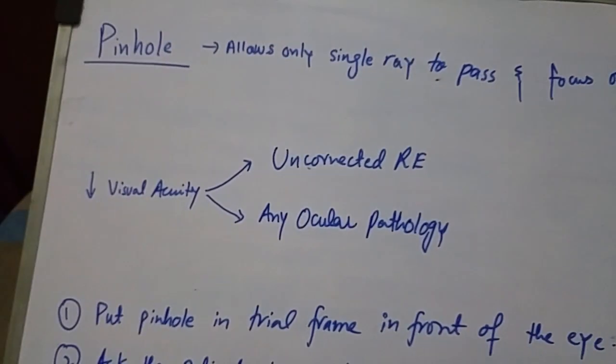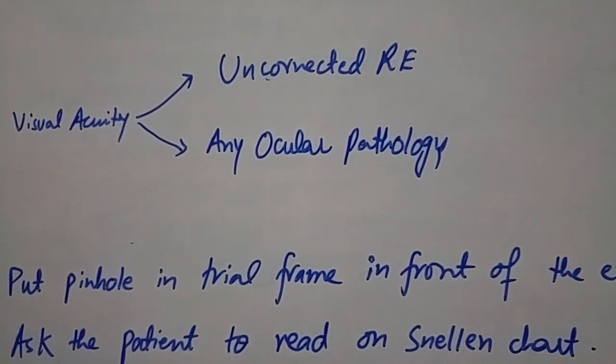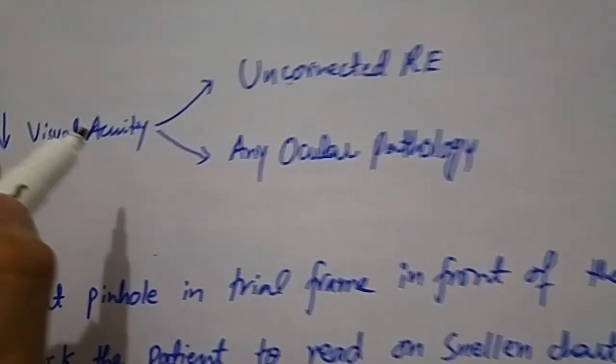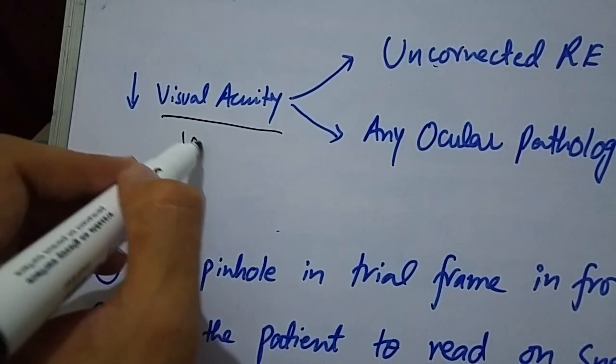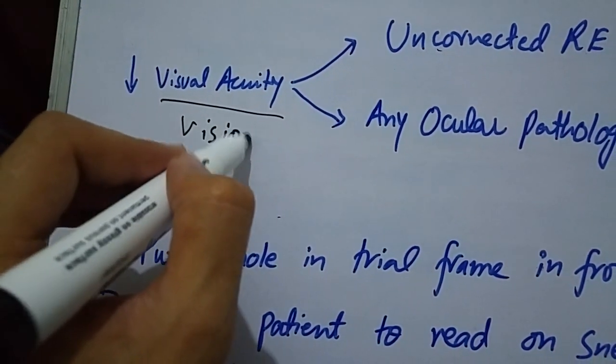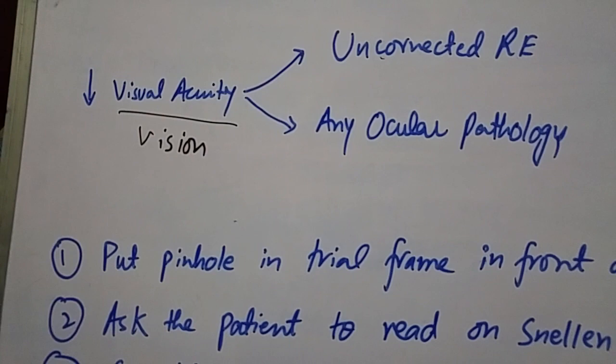So pinhole basically allows us to detect whether decreased visual acuity or vision is due to refractive error or any other ocular pathology or neurological disease.